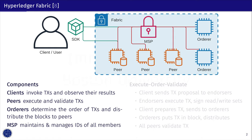A very simplified Fabric deployment consists of these parties. A client is a user application which initiates a transaction through the SDK. Peers are the nodes running in the network that, among other things, maintain the ledger. Orderers are the nodes whose sole purpose is to order transactions, pack them into blocks, and distribute to the peers. All parties can talk to each other through the gossip protocol, and they all talk to an MSP. A membership service provider is the component responsible for everyone's identities. This is the component we target.